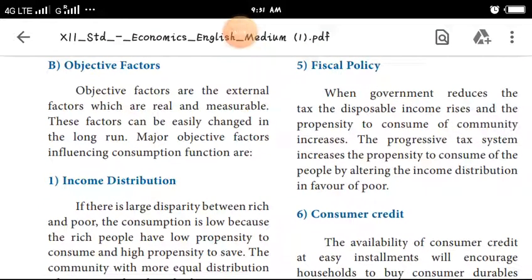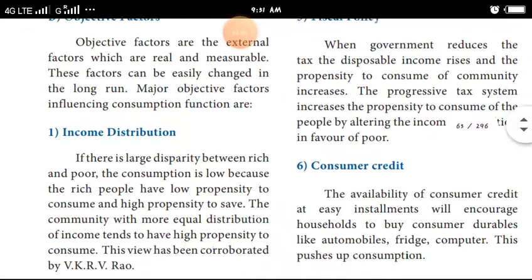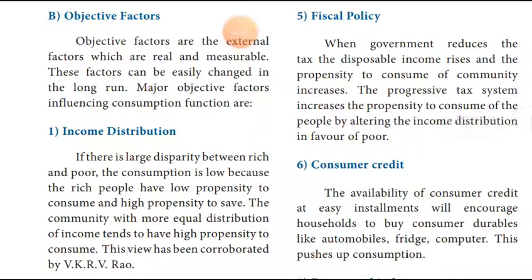The main objective factors influence the consumption function. The first objective factor is income distribution. If there is a large disparity between rich and poor, consumption is low because rich people have low propensity to consume and high propensity to save.